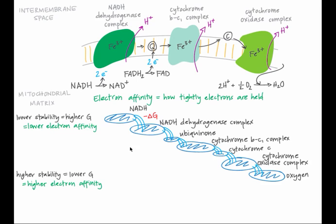As you can see, each step along the electron transport chain reaches higher electron affinity, lower energy, and greater stability. This drives the process in one direction. The difference in affinity from one step to the next is pretty small, which allows the energy release to be harnessed to pump hydrogen ions.